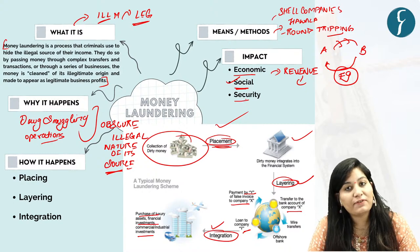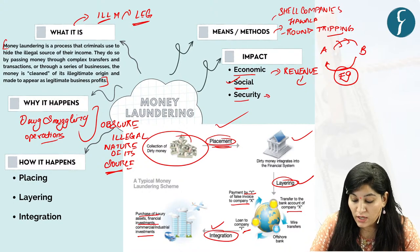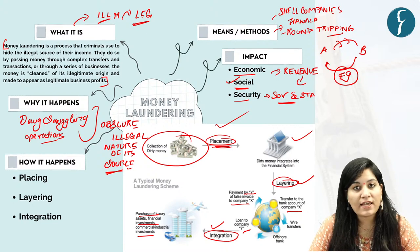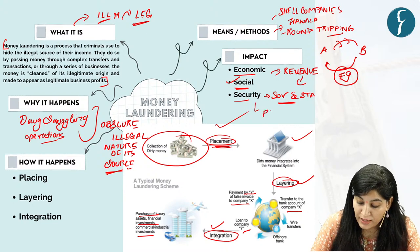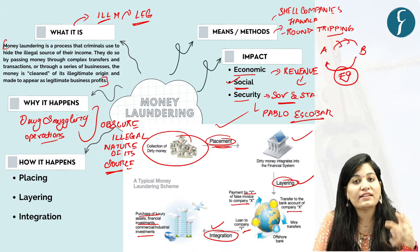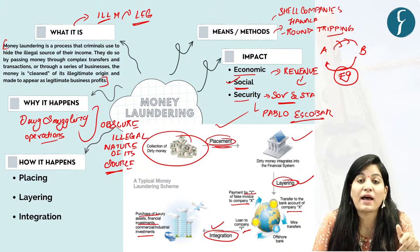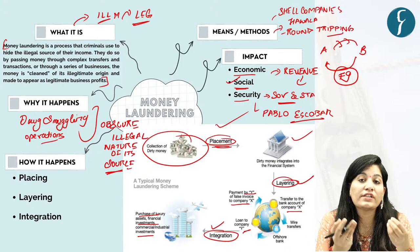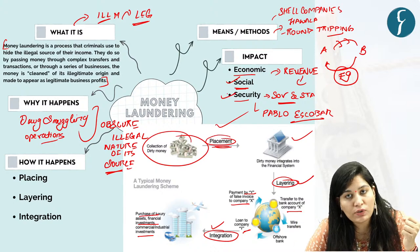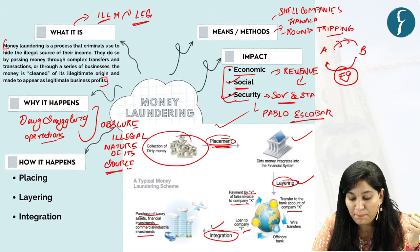On the security front, money laundering poses a threat to sovereignty as well as stability of a nation by running a parallel government. For example, drug lord Pablo Escobar ran a parallel government in 1980s and 1990s in Colombia, posing a threat to the sovereignty and stability of the nation. So these are the different impacts of money laundering.